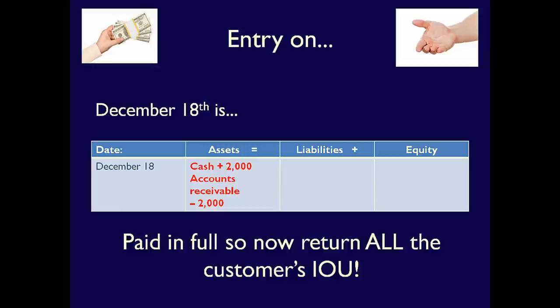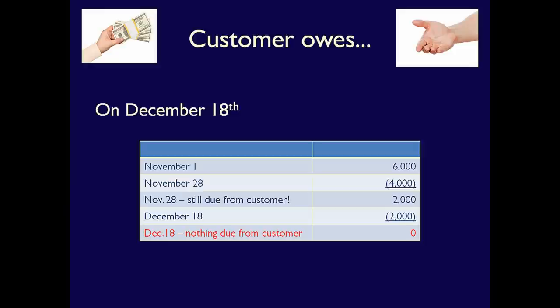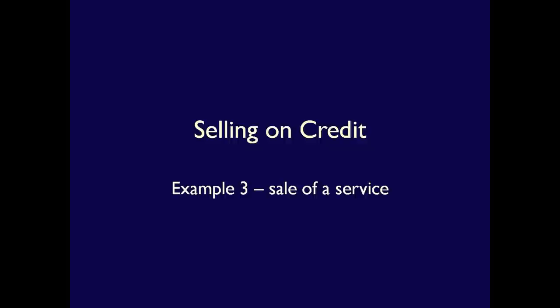On December 18, the customer pays the remaining $2,000. What did we get? Cash — assets increase. What did we give away? We gave back the remainder of the customer's IOU, the $2,000 still outstanding. We reduce accounts receivable by $2,000, and the customer's accounts receivable balance now stands at zero. Note that it took a bit of work to collect all that money from the customer.